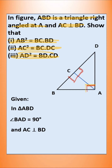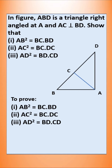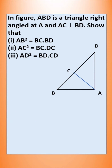What is to prove? The 3 things we need to prove: the first one is AB squared is equal to BC into BD. The second one is AC squared is equal to BC into DC. The third one is AD squared is equal to BD into CD. Now let us prove the first one: AB squared is equal to BC into BD.